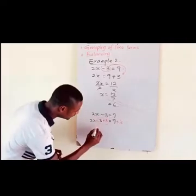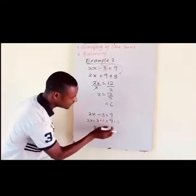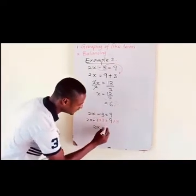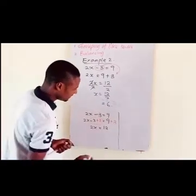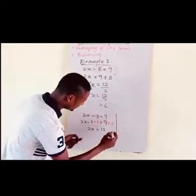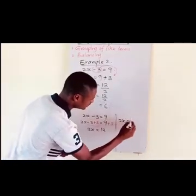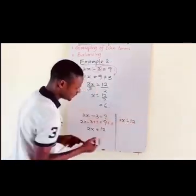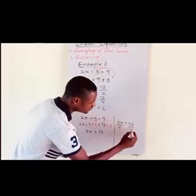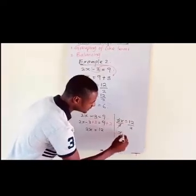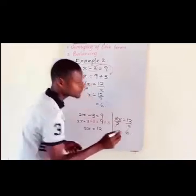At the left hand side we will be left with 2x, and at the right hand side 9 plus 3 gives us 12. Whatever we introduced at the left hand side, we also introduced at the right hand side. If we want to find the value of x: 2x is equal to 12, we divide through by the coefficient of x which is 2. Then x is equal to 12 divided by 2, which is 6.